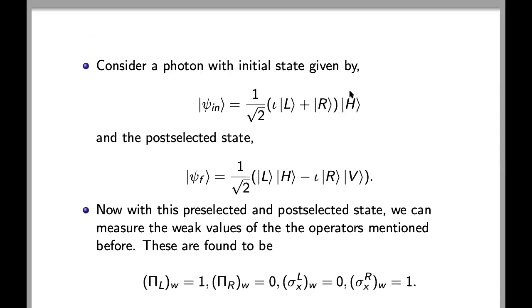Now consider a photon with the initial state given by this, where we can see that it is in superposition of left and right state, and it has polarization in the horizontal direction. And the post-selected state to be this state, where you have superposition of both the position as well as the polarization.